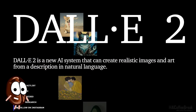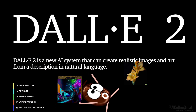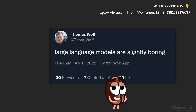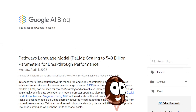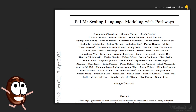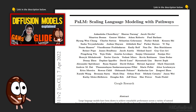Should it be DALL-E 2 from OpenAI that can generate or edit images from just text? Or rather the slightly boring news about a new largest large language model called Pathways Language Model, or short PaLM, from Google AI. We suppose you already guessed from the title of this video that we decided to go for PaLM. We did not choose DALL-E 2 for the moment because we released a video about diffusion models and Glide way too recently to deal with that again just now.